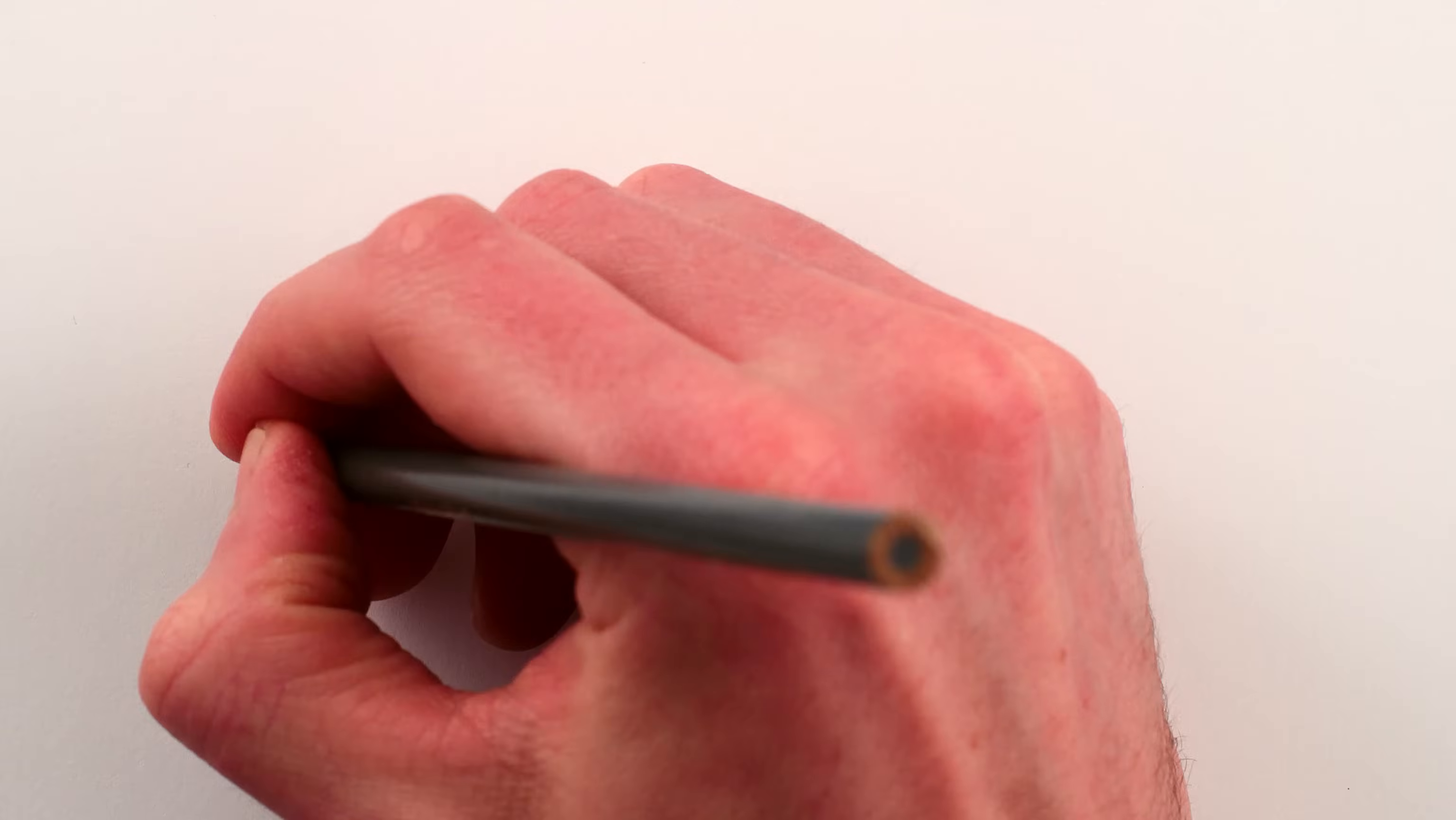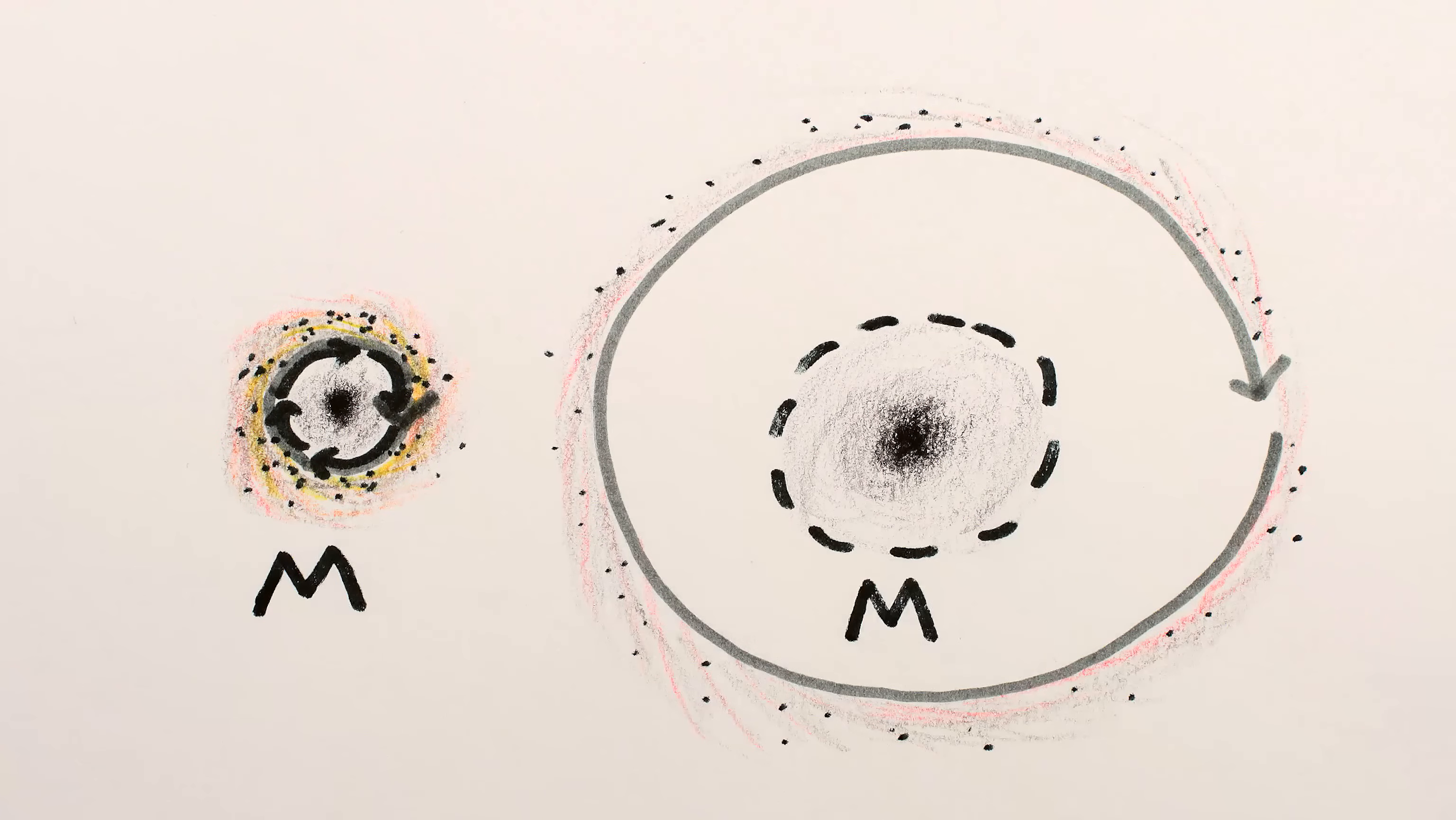The details depend on how fast the black hole is rotating, but for a very quickly rotating black hole, the innermost possible orbit coincides with the event horizon, instead of being three times farther away.